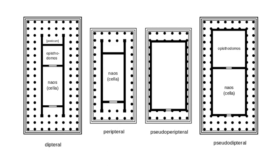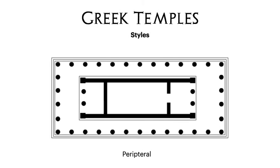Here we've got some more complicated designs. The dipteral ones are the ones that have two sets of columns all the way around them. Pseudo means fake, or sort of an imitation or the impression of. So those pseudo-peripteral and dipteral temples — you can see that those columns aren't freestanding, they're sort of built into the walls. But the one that I want us to focus on is the peripteral temple. Peri means around — it's a prefix we use for all around, like the perimeter of a shape is the outside edge. Temples are called peripteral when they have columns all around the outside.